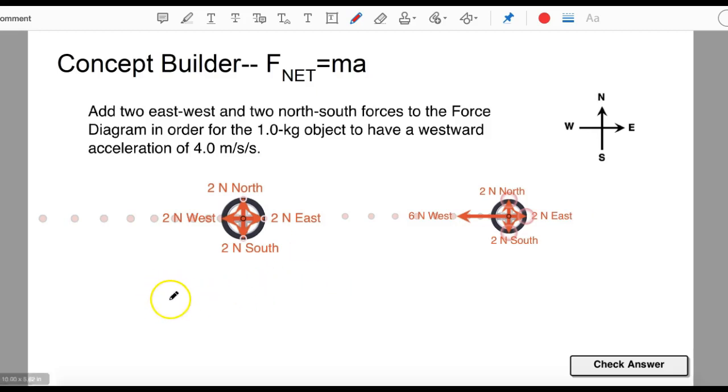So I want the acceleration to be equal to 4 m/s², which means that the acceleration has to be equal to whatever force it is divided by the mass, and that needs to be equal to 4 m/s².